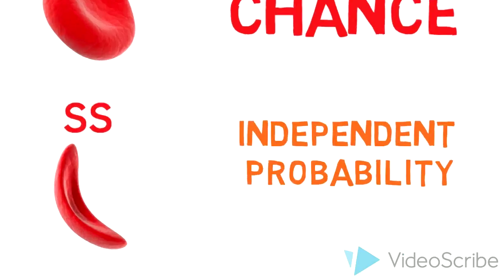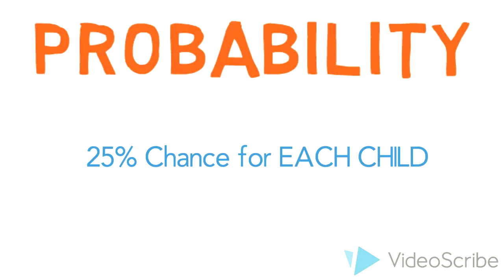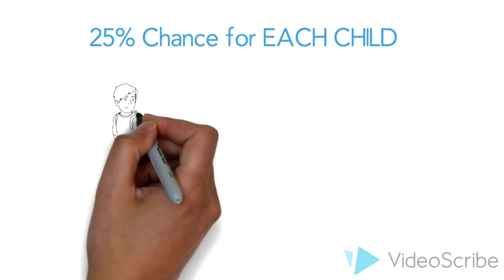What do we mean by probability? Really, there is a 1 in 4 chance or 25% chance that any one of the children will express the disease.